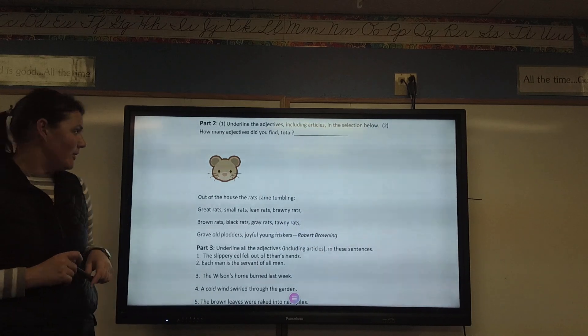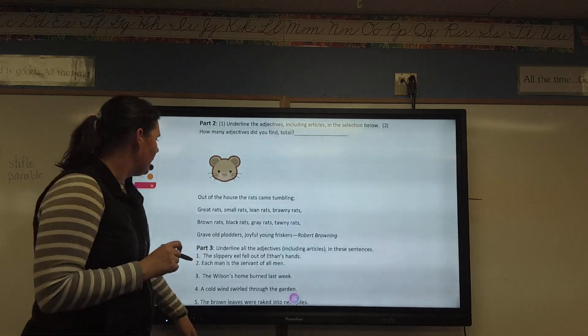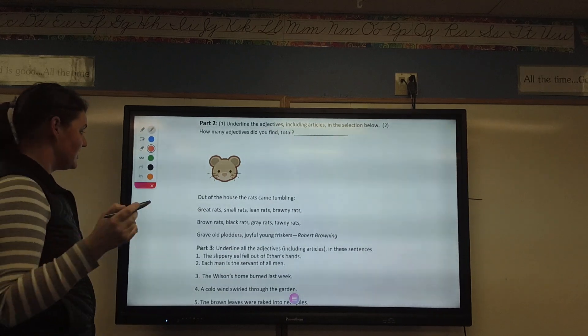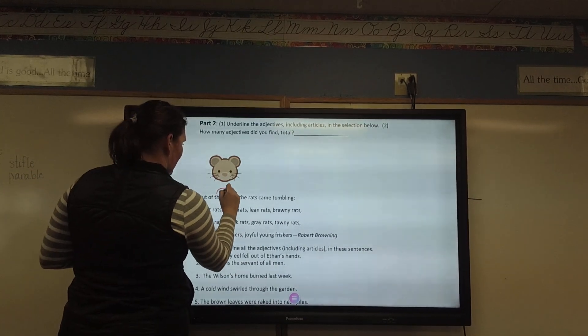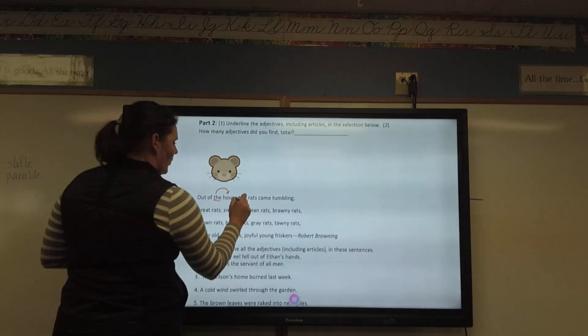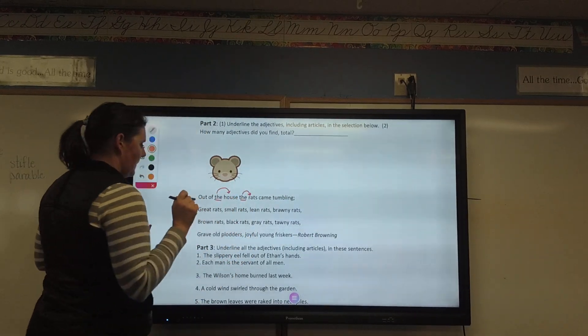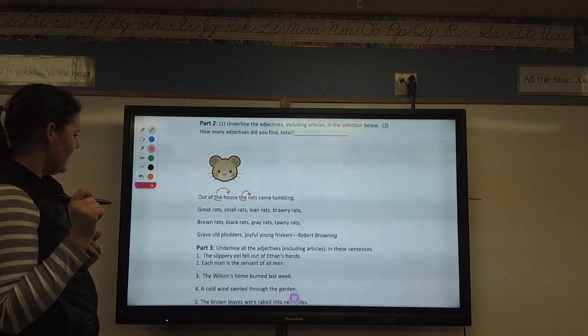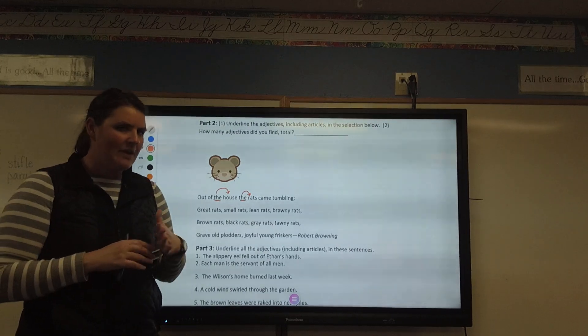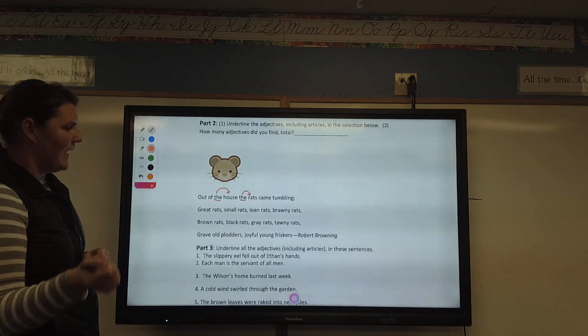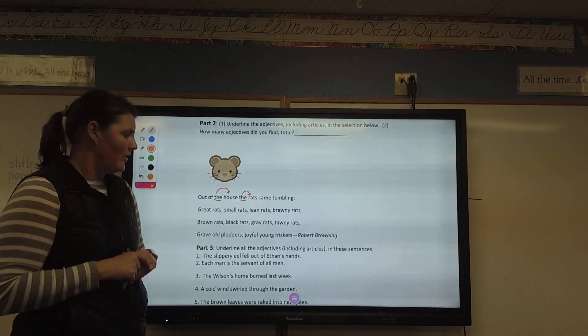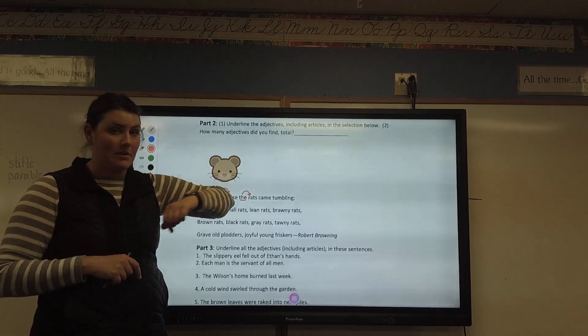Let's do just one line of that together. Well, I know that a and the are always going to be adjectives. So, I know which house, the house, which rats, the rats. Anything else. Is out, answer that question, answer those adjective questions, not really. Came is an action, so that for sure is not an adjective. Tumbling is describing how they came, so that's not an adjective. And I'm done with that sentence. But if you go through the rest of the poem, you'll be able to find some more. Make sure you have the final number that you need in that blank.